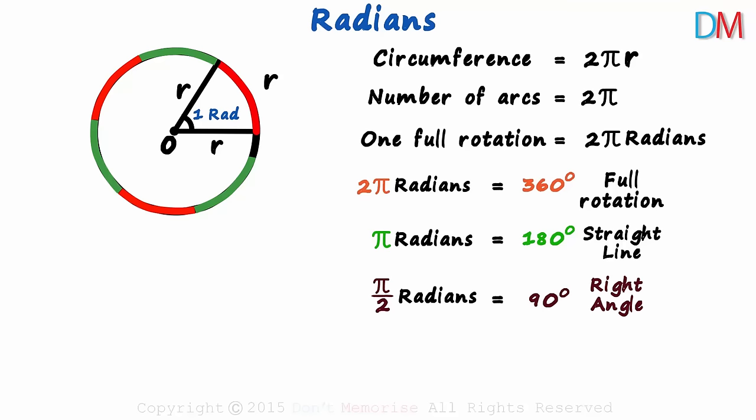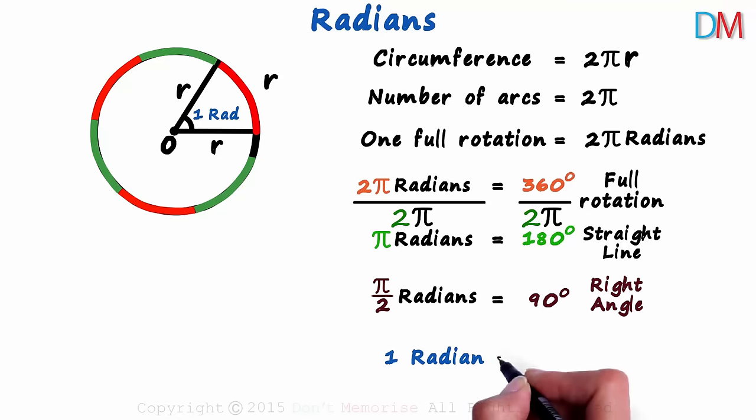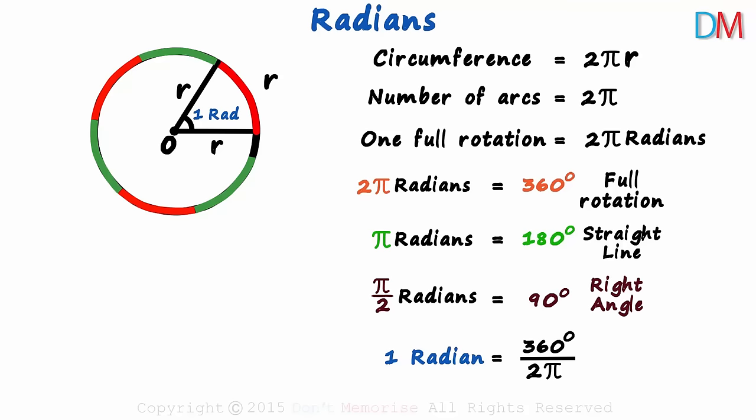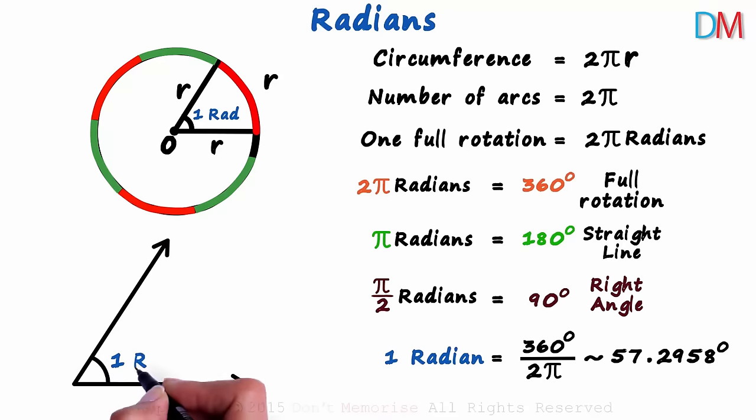And now we come to the last and the most important point of this video. What does 1 radian equal to in degrees? If we divide the first equation by 2π, we get 1 radian as 360 over 2π degrees. Substituting the value of π as 3.14, we get the approximate value of 1 radian as 57.2958 degrees. That's the degree measure of 1 radian. If we have an angle like this, which measures 1 radian, it will equal 57.2958 degrees.